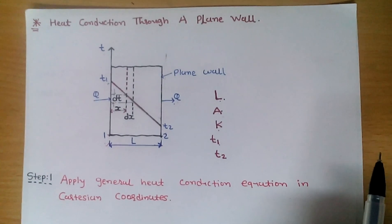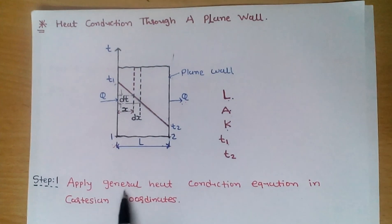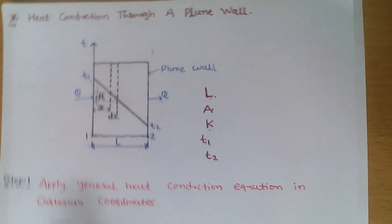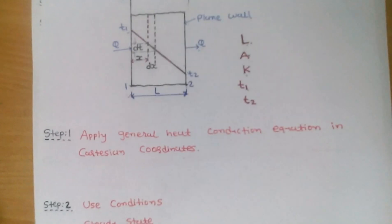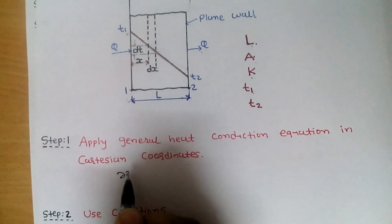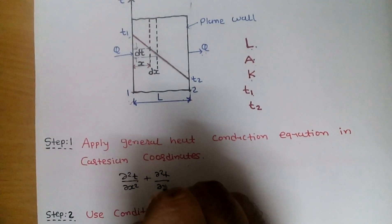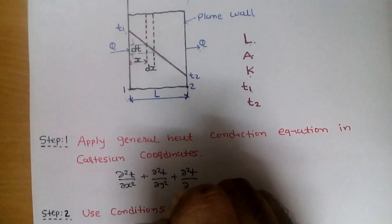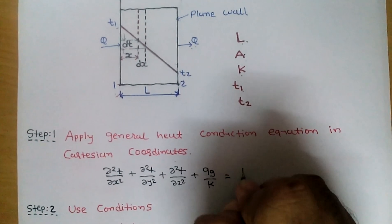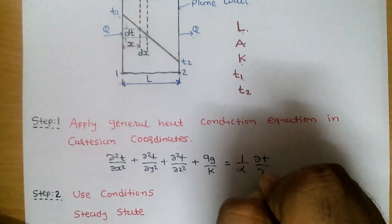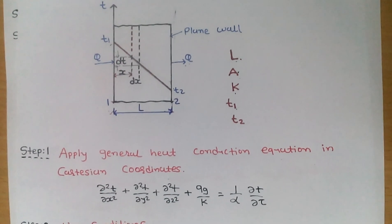We define the equation for a plane wall. A plane wall means there is no angle, so we use the general heat conduction equation in Cartesian coordinates. The equation is: ∂²T/∂x² + ∂²T/∂y² + ∂²T/∂z² + qg/k = (1/α)(∂T/∂τ). So in step one, apply the general heat conduction equation in Cartesian coordinates.